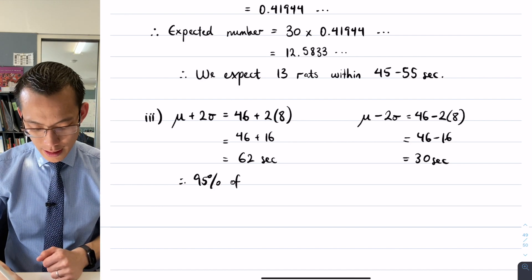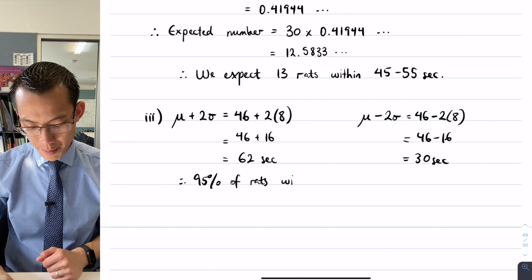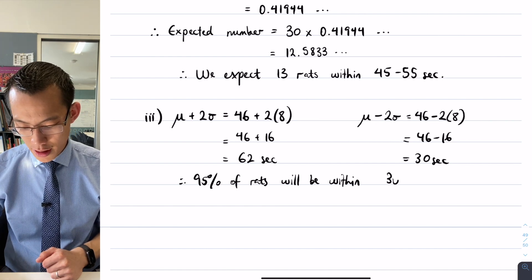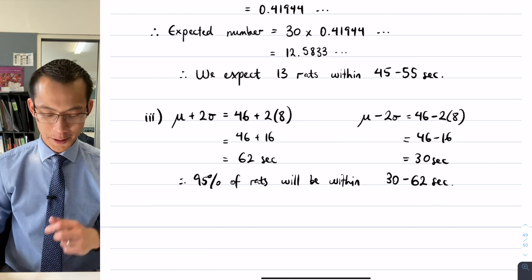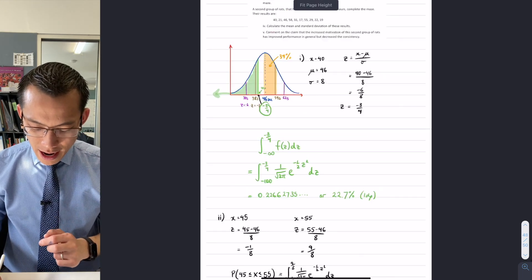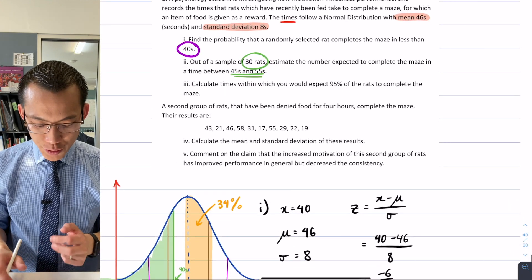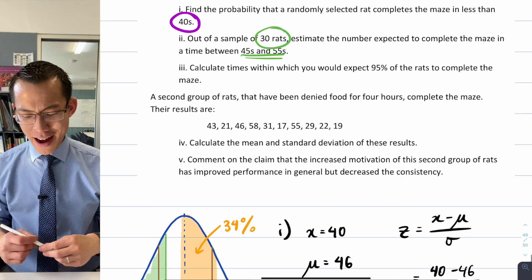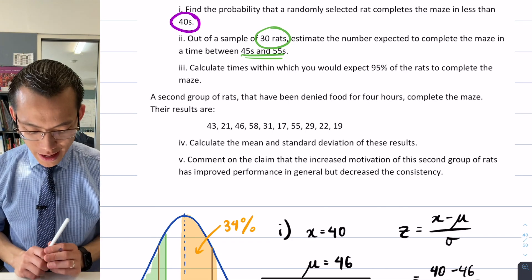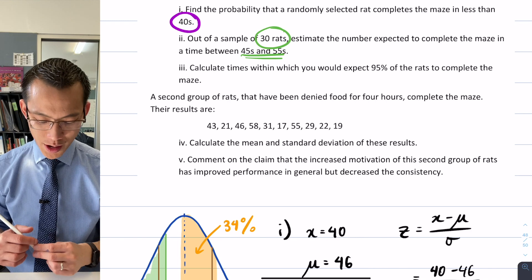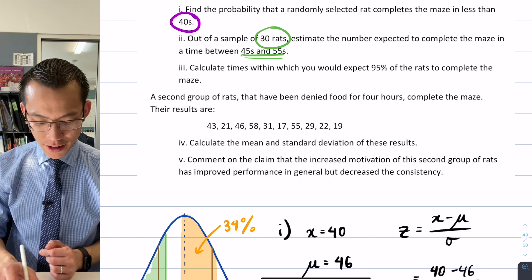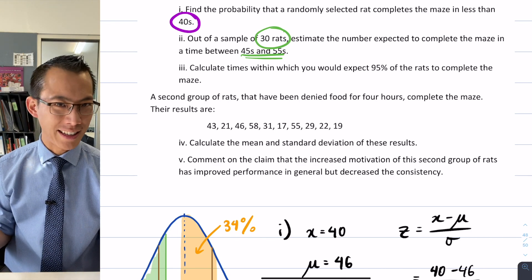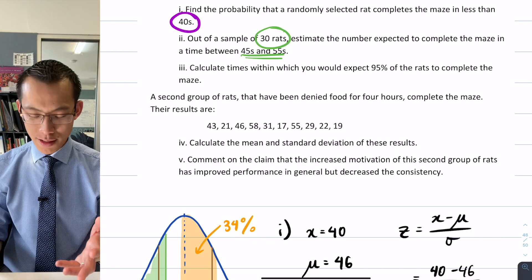So therefore, 95%—at least this is what our model tells us—95% of rats will be within this time range: 30 to 62 seconds. Okay, now at this point they then introduce a second group of rats who very sadly have been denied food for four hours, and then they get sent through the maze as well, and then we get their times. So this is kind of like calling back—you know, when you have a look at this data set, this is calling back to where we were in years 8, 9, and 10 where we just got given numbers.